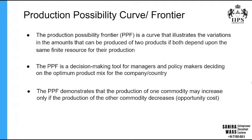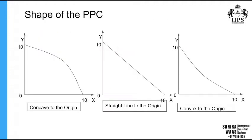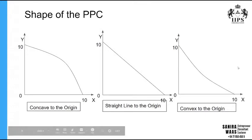Now let's look at the graphical representation of the PPC. The shape of the PPC can take three different forms: concave to origin, straight line, and convex to origin. These shapes are closely linked with the concept of opportunity cost, which is covered in other videos. For part one, you just need a sound idea of the three shapes. In economics, we most commonly use the concave-to-origin PPC to illustrate various economic concepts.